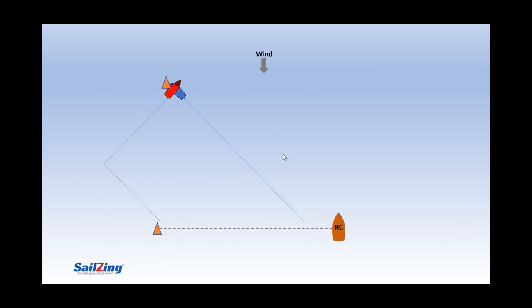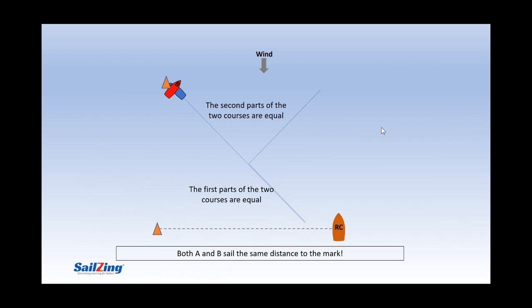How do these two courses compare in distance? Let's bring them together. You can see that the first two parts of the courses are equal down here. What about the second parts of the course up here? If you look closely at these two lines, you can see they form part of a triangle with two equal legs. So the second parts of the course are also equal. So the answer to our question is that both A and B sail the same distance to the mark.